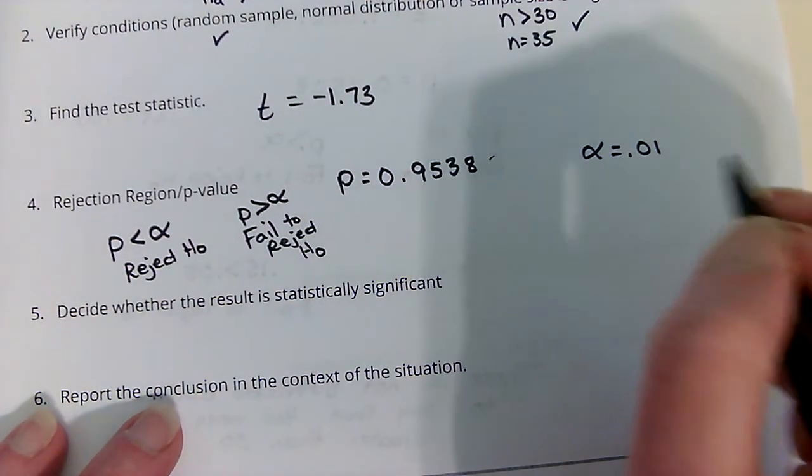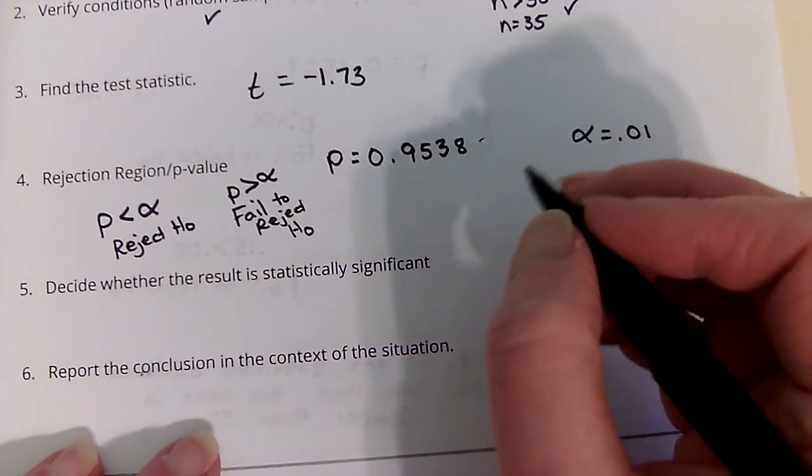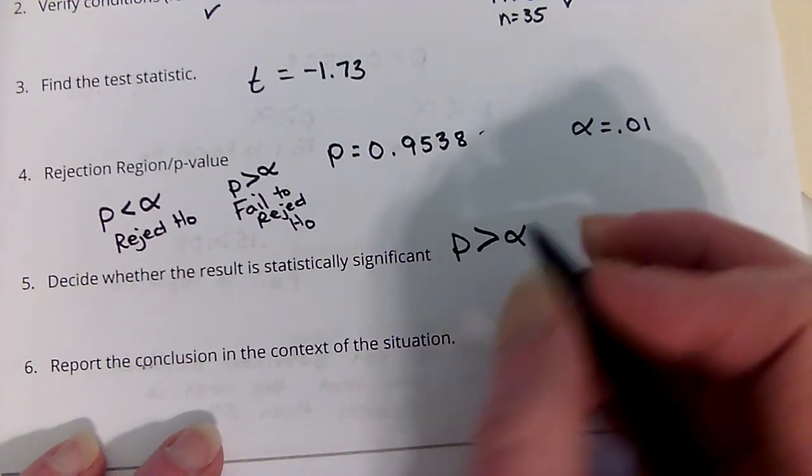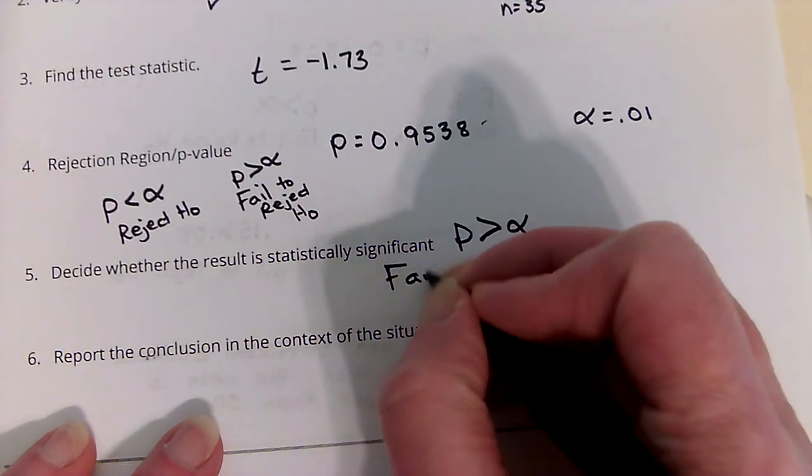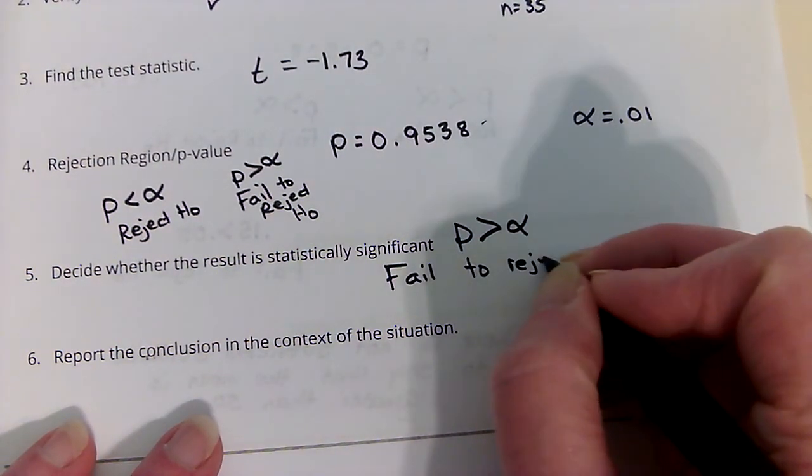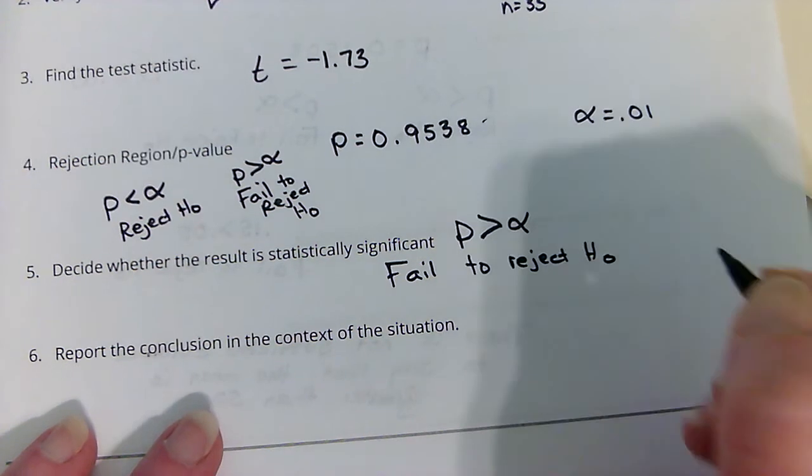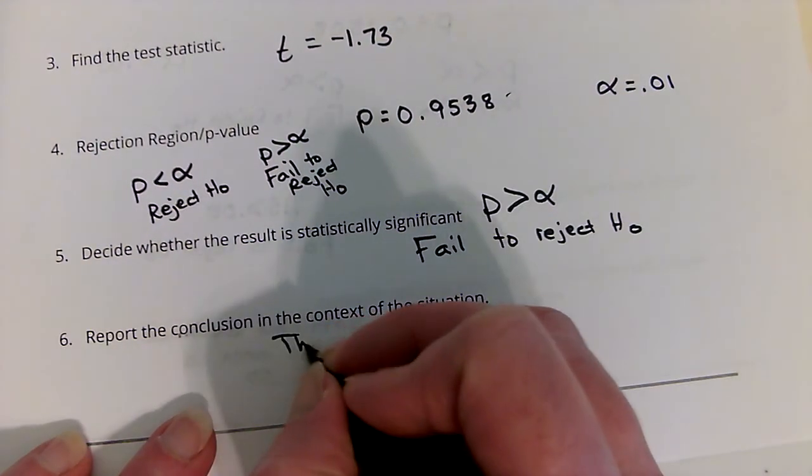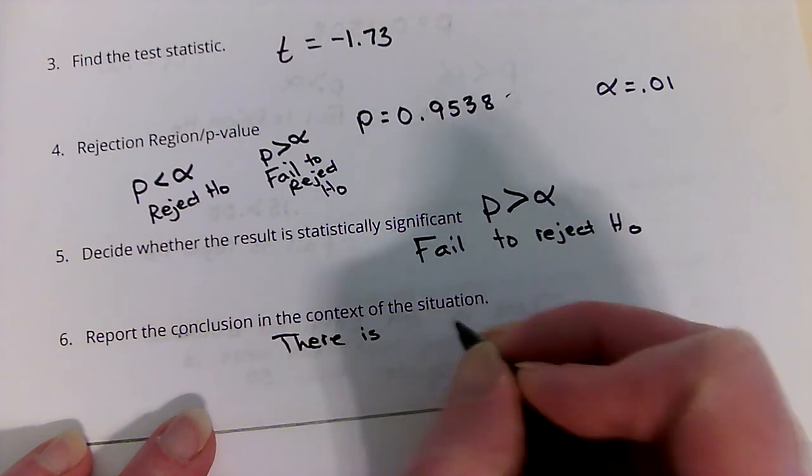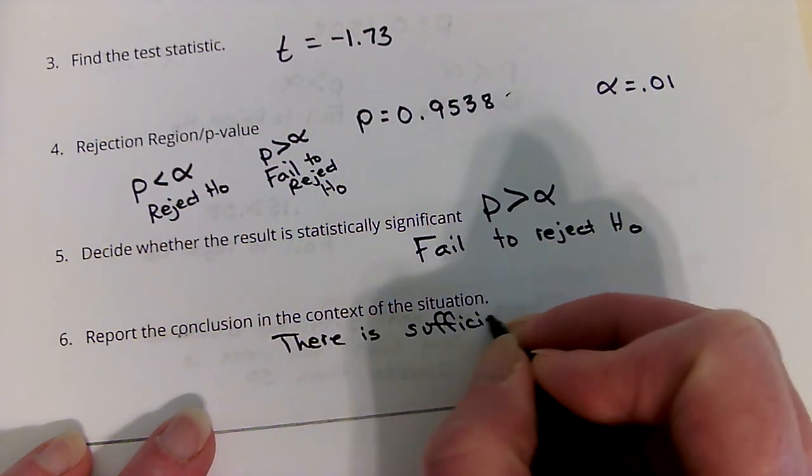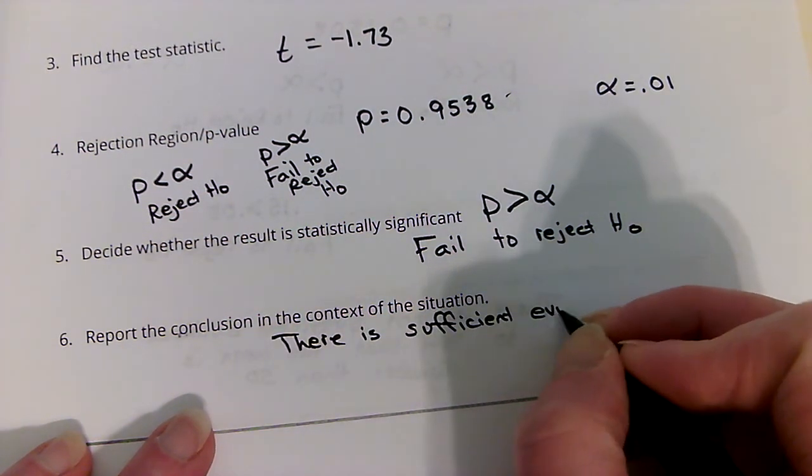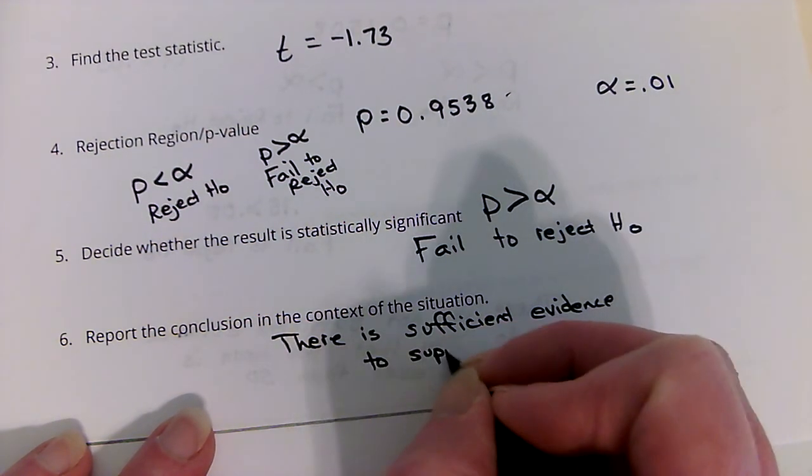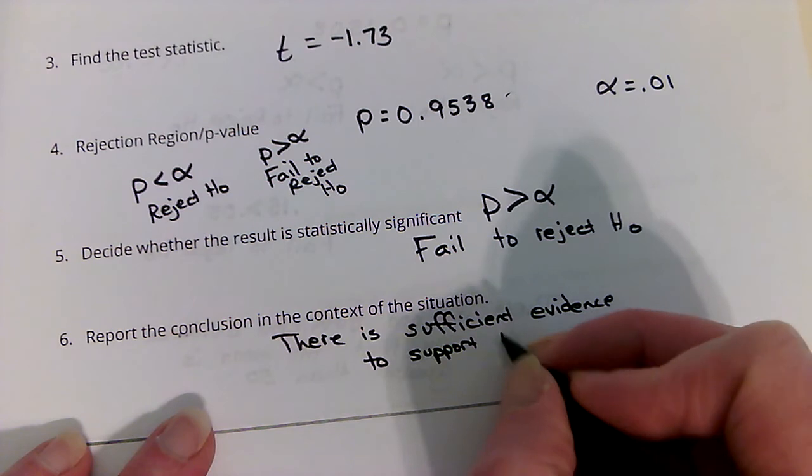Well, p is definitely greater than alpha. It is much greater. p is much, much, much greater than alpha. So we fail to reject the null. So in this case, the claim was the null. So there is sufficient evidence to support Papa John's claim.